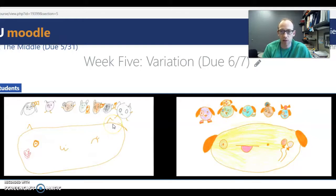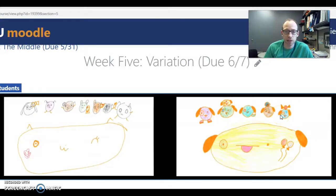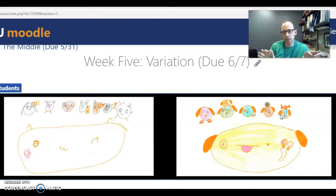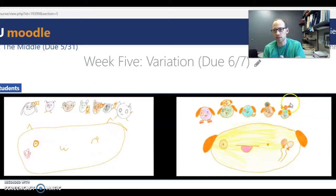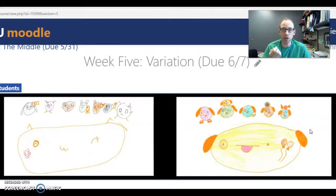I asked my two daughters to draw some pictures of dogs. On the left you'll see Katie, my six-year-old's drawing of dogs, and on the right are Ellie's drawings of dogs. There are two types of variation I want to point out here. The first is between-group variation — Katie's dog drawings in general have some distinctive qualities that are different than Ellie's dog drawings. That variation between the groups is often called good variation, or signal.